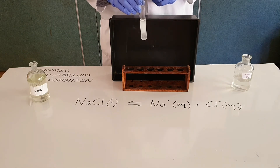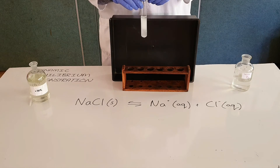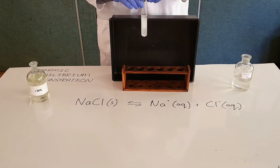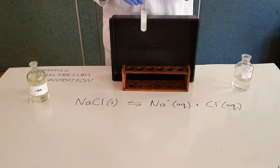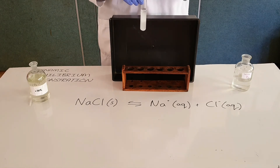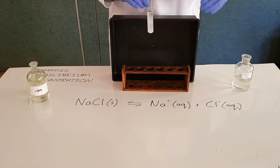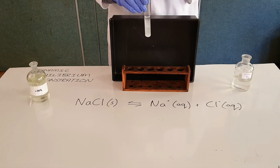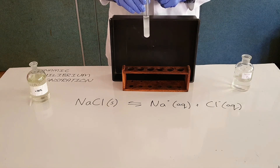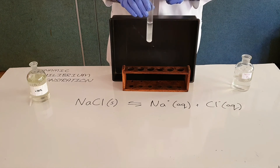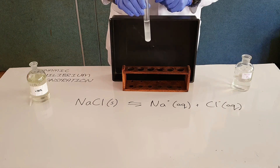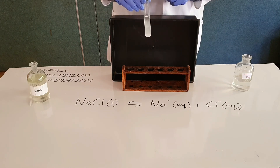Note that this is a dynamic equilibrium and there is no chemical reaction happening here. This is a physical process where solid sodium chloride is being ionized into sodium ions and chloride ions, and the reverse process is where those sodium and chloride ions combine again to form a solid white precipitate, which we can see being deposited at the bottom of this test tube.